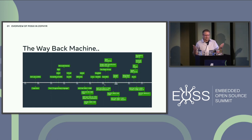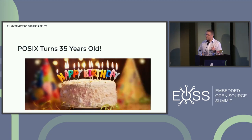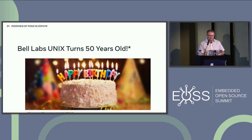As POSIX has evolved, so have C and C++. Doing the math, POSIX has turned 35 years old this year. And Bell Labs Unix turns 50 this year — since the official public release — which is pretty amazing.